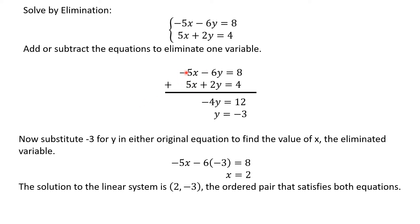Note: the signs must be opposite — one negative and one positive — so the result is 0. So negative 5x plus 5x equals 0. Then negative 6y plus 2y equals negative 4y. And 8 plus 4 equals 12. To remove the negative 4 coefficient, we divide both sides by negative 4. The answer is y equals negative 3.